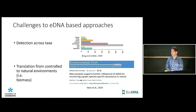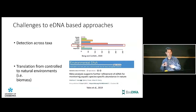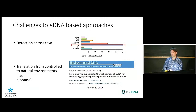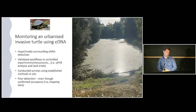Like any method, there are challenges to eDNA-based approaches. I'm going to focus on two. First, detection across taxa: fish make up the majority of eDNA studies, and they seem more appropriate to detect because they're constantly contributing eDNA to the environment. Second, a lot of eDNA testing is done in a controlled sense, and when we take it to more complex natural ecosystems, that resolution gets lost. The challenge is really communicating that to end users who have high expectations of what eDNA can do.